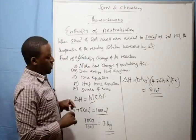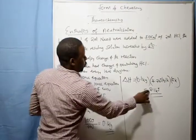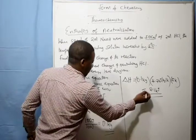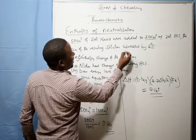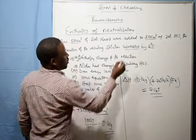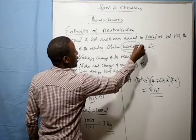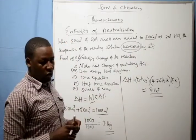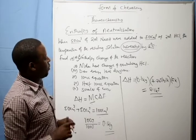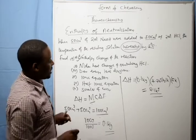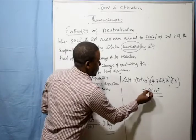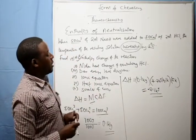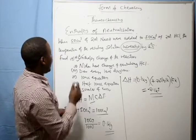That is our enthalpy change of the reaction, is 2.1 kilojoules. Now remember, the solution increased the temperature. So the temperature increases. Anytime the temperature increases in a reaction, that type of reaction is an exothermic reaction which is given a negative sign. So our enthalpy change is negative 2.1 kilojoules.